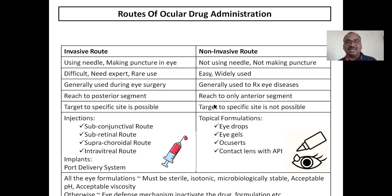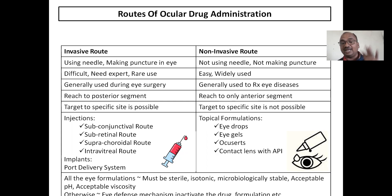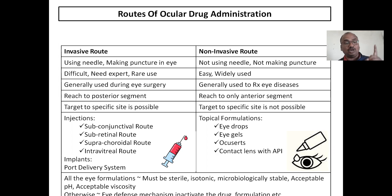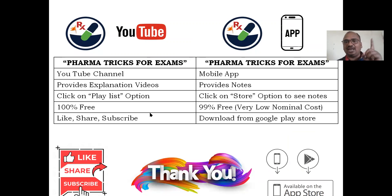The non-invasive topical route is generally used to treat eye diseases but reaches only the anterior segment — it will not reach the posterior segment. Topical formulations include eye drops, eye gels, ocuserts, and contact lenses with active pharmaceutical ingredients — all releasing drug only to the anterior part. Whatever formulation you prepare, it must be sterile, isotonic, microbiologically stable, at an acceptable pH, and have acceptable viscosity, otherwise the eye's defense system will eliminate the drug. Session ends here due to poor signal.